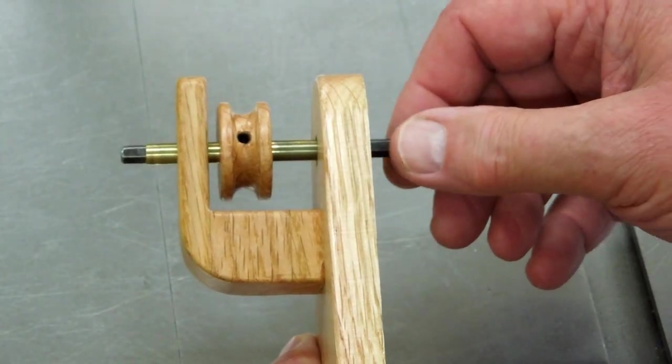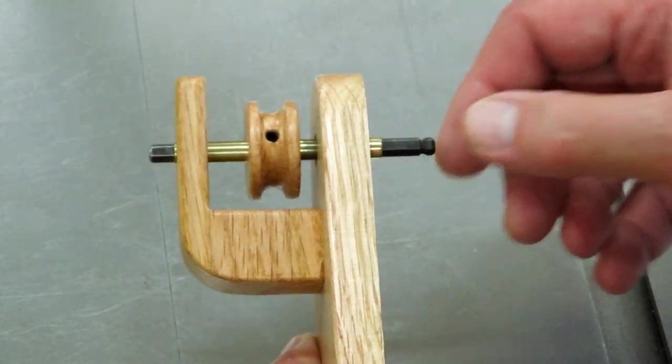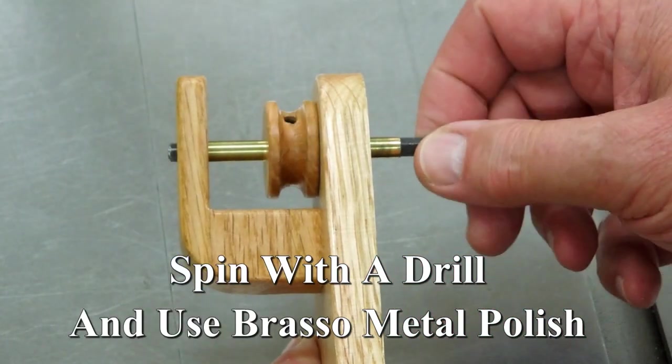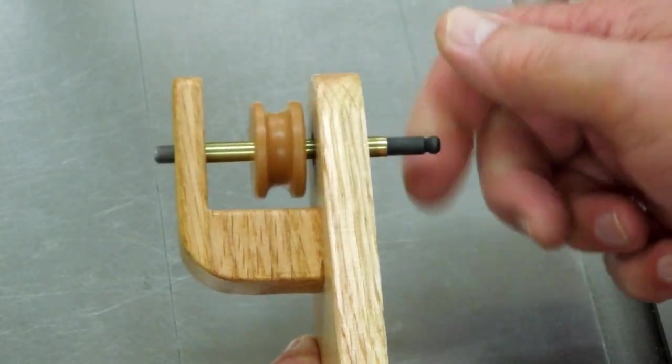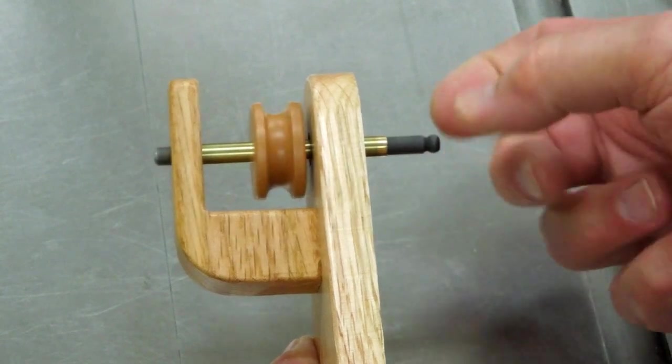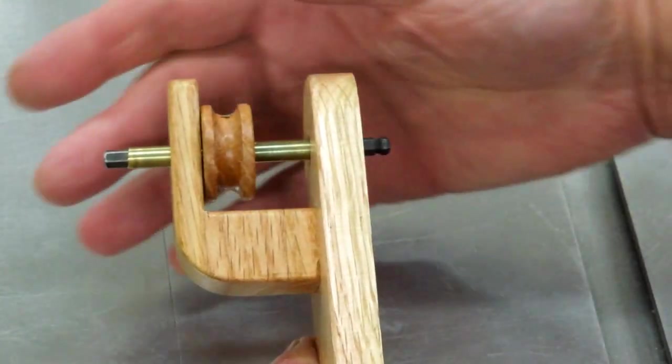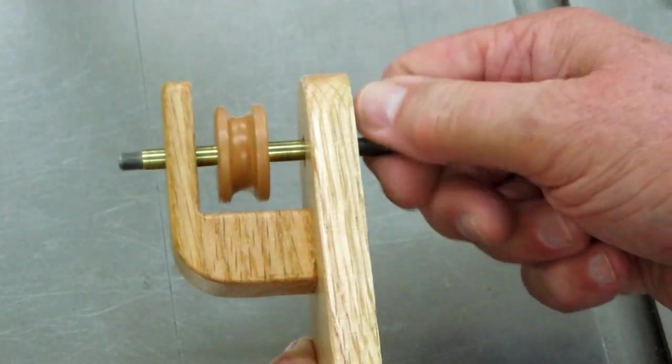Take your brass tubing, before you cut it to length, run it through those bushings, put a little brasso on there and lap that in so that that will turn very freely and will slide back and forth without any type of resistance.